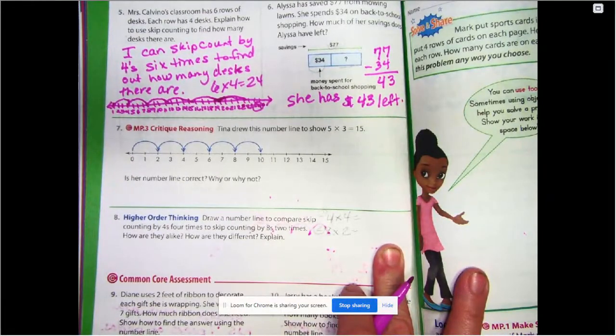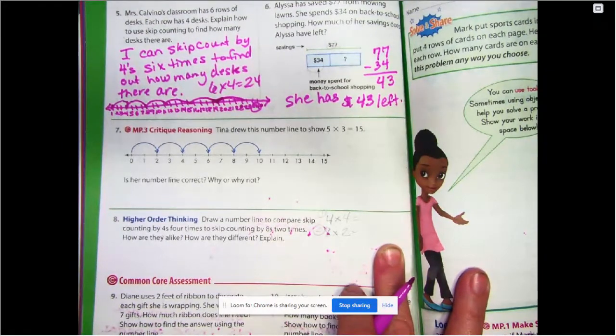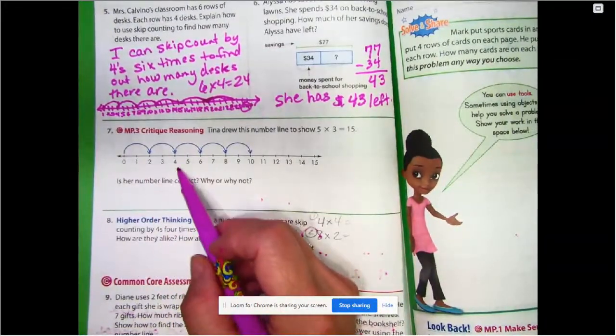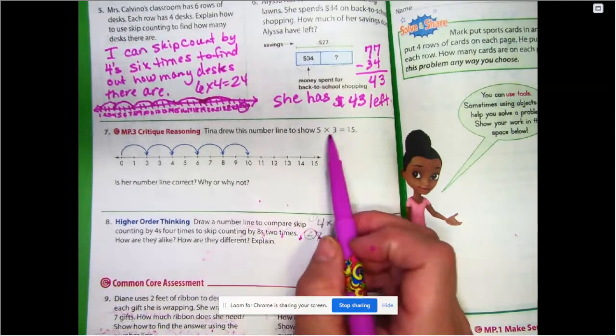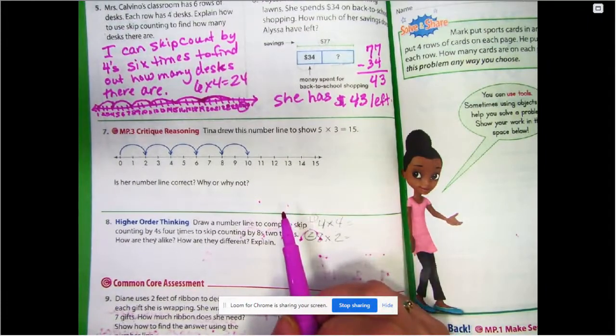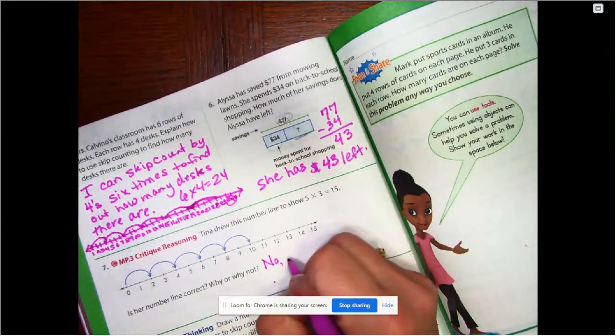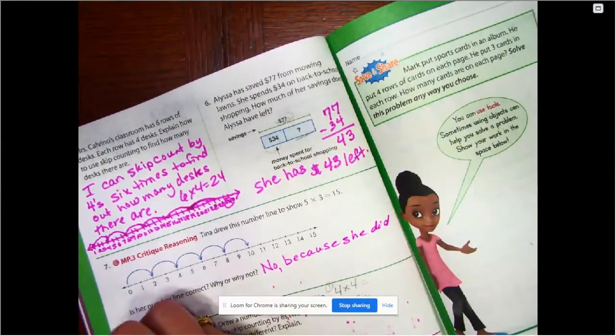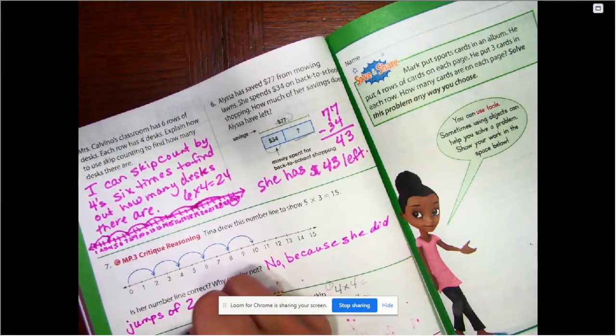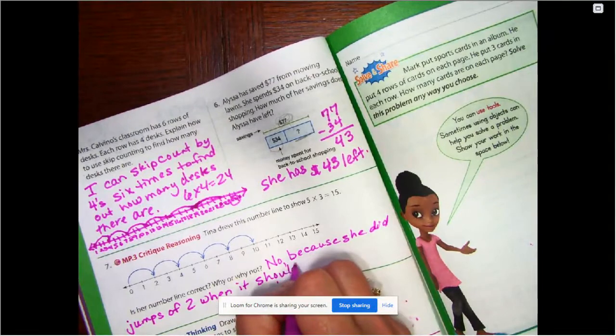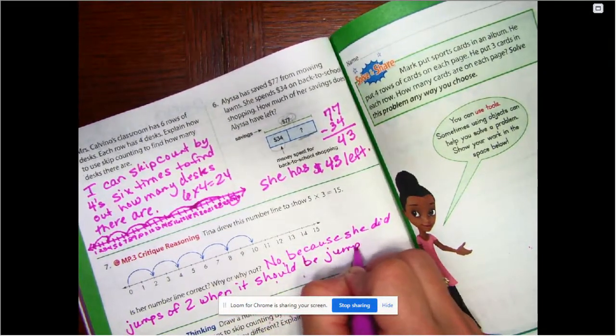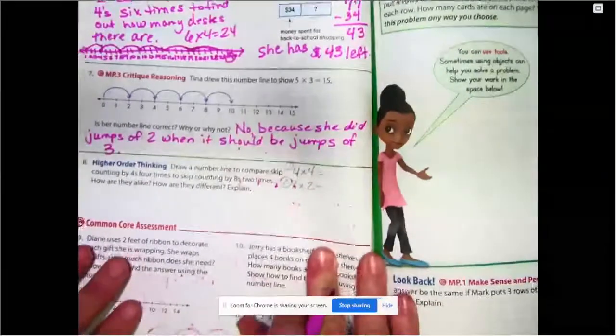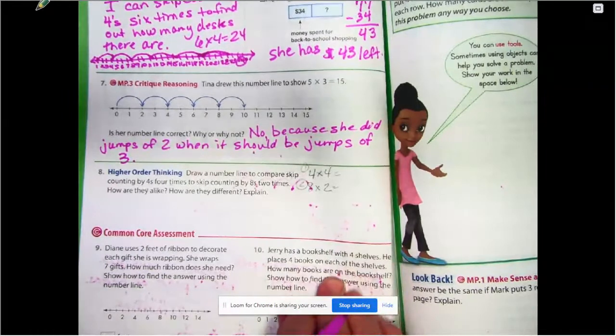All right. Number seven says, Tina drew this number line to show five times three equals 15. Five groups of three equals 15. Is her number line correct? Why or why not? Okay. Two, four, six, eight, ten. We're doing jumps of two. So does her number line work? She did jumps of two when it should be jumps of three. So if you have something pretty close to that, that's fine.